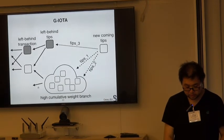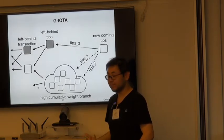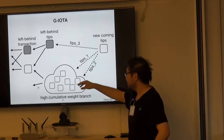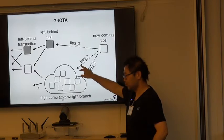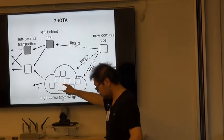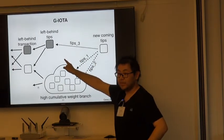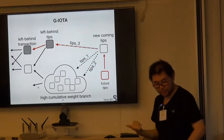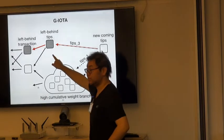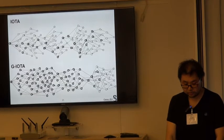Here we propose a solution called JALTA. The idea is very simple — we fix this problem without introducing new problems. After choosing the two parents using the first layer — choosing two tips as parents as in the original IOTA design — I will look into my local Tangle. If I find a left-behind tip, I will choose that one to approve as well. So by this way I choose a third tip, and for other new coming transactions, they also have a chance to approve this one. We give the left-behind transactions new probabilities to be confirmed.